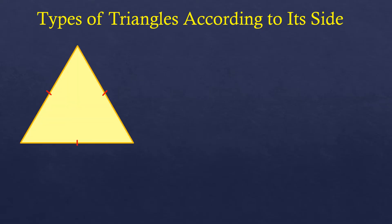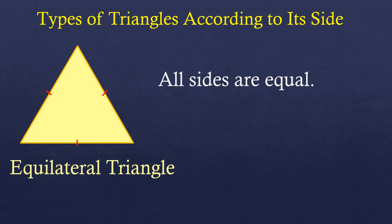If we have this kind of triangle where all sides are equal, we call it an equilateral triangle.